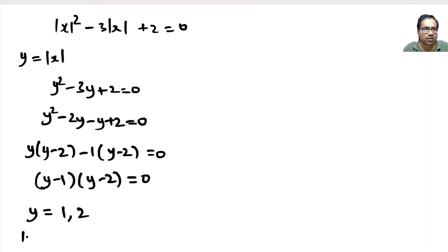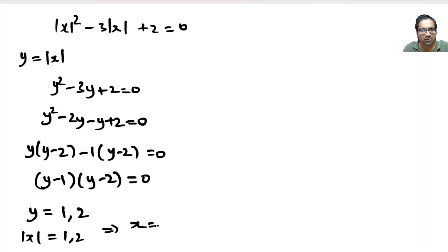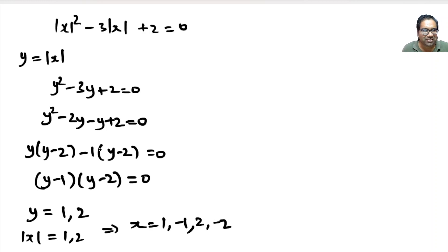That means mod x equals 1 or 2. If mod x is 1, then x can be 1 or minus 1 — in both cases mod x is 1. Similarly, x can be 2 or minus 2. So there are four solutions.